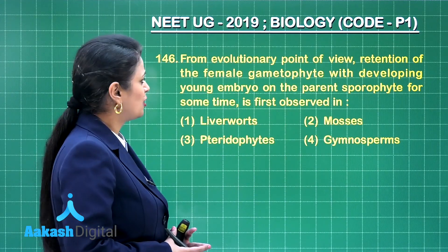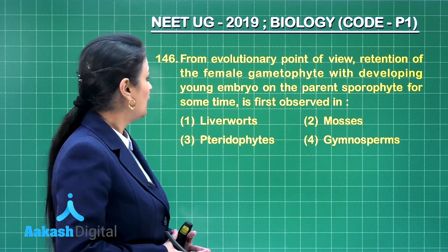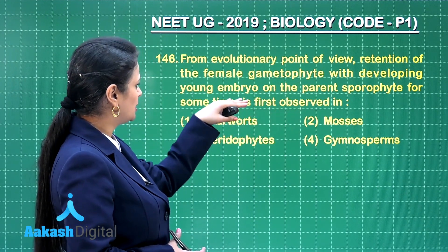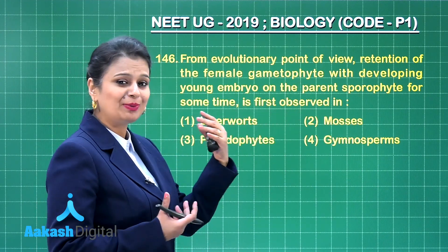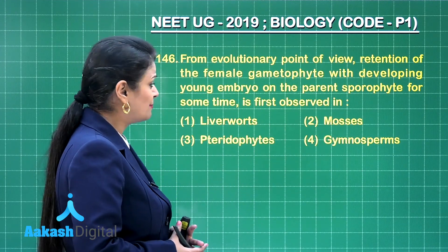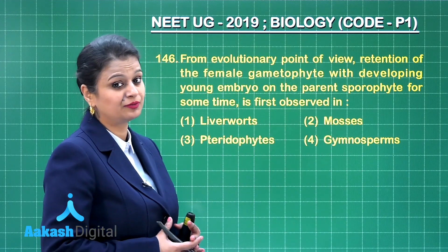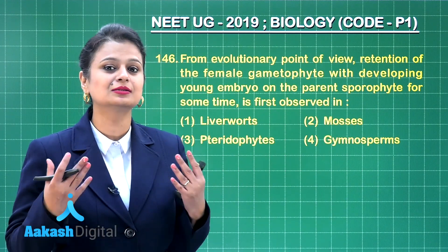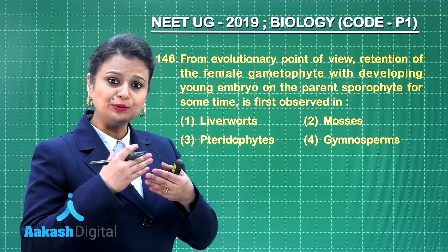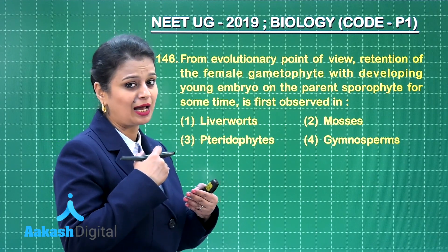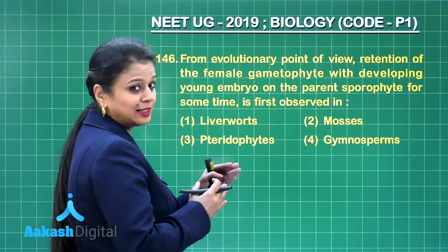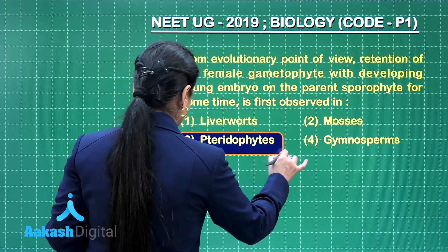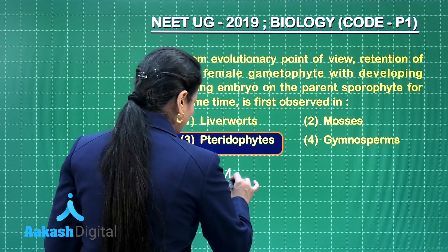Question number 146. From an evolutionary point of view, retention of the female gametophyte with the developing young embryo on the parent sporophyte for some time is first observed in — this event represents a precursor of seed habit, and the precursor of seed habit was for the first time observed in pteridophytes. So the right answer to this question is option number 3.